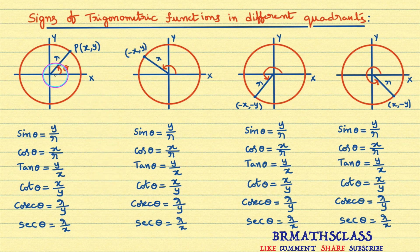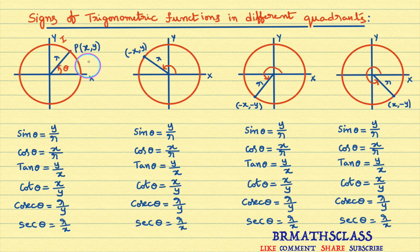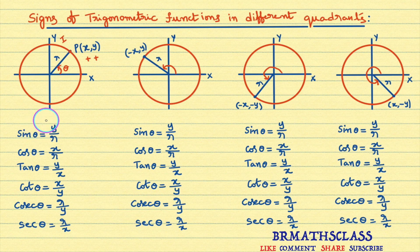Now you see this first diagram. In the previous class, we learned definitions of trigonometric functions. This is the initial ray OA. You rotate OA through an angle theta. Observe here — this point P is in the first quadrant. We know that in the first quadrant, x coordinate is positive and y coordinate is also positive. These are the definitions of trigonometric functions, and theta is any angle. In a circle, radius is always positive — you cannot draw a circle with a negative radius. In all four diagrams, radius is always positive.